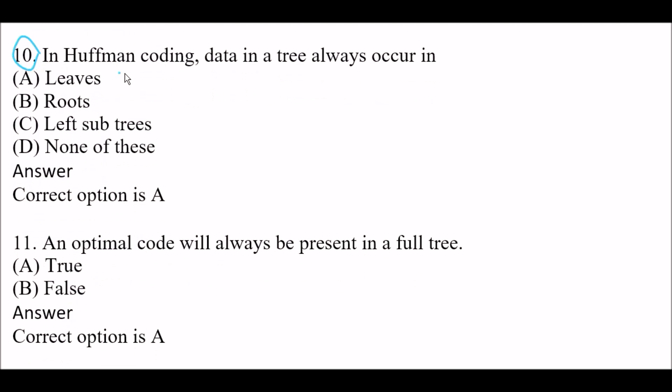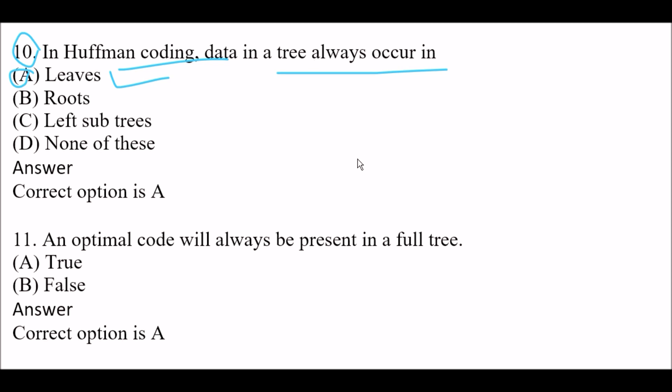Next question: In Huffman coding, data in a tree always occurs at — Option A: leaves. Option B: roots. Option C: left subtrees. Option D: none of these. The right answer is Option A, leaves. In Huffman coding, data in a tree always occurs at the leaves.